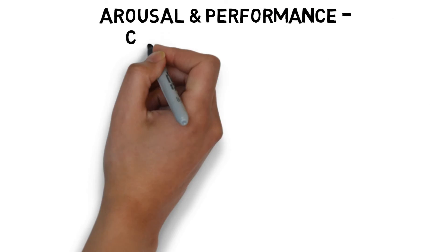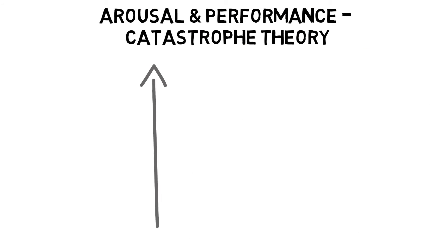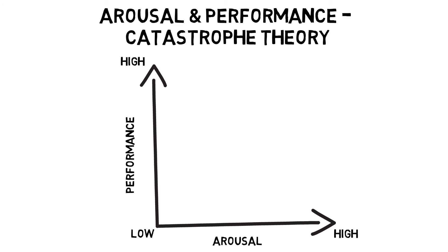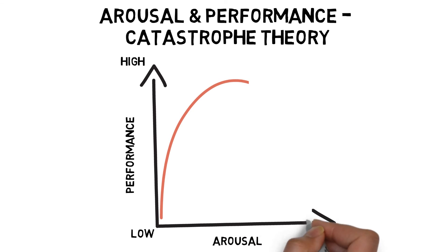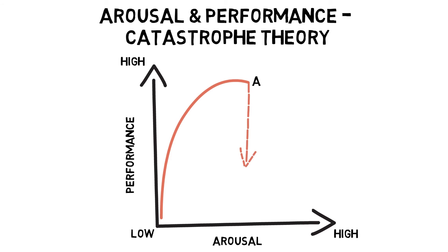Catastrophe theory is a variation of the inverted U theory. This theory suggests that performance does not always decline gradually after the optimal level of arousal has been reached. Instead, it can be a dramatic decline or catastrophe, such as when a performer tries too hard. Point A represents the optimal level of arousal. Point B shows a drastic decline in performance. Here, performance will head one of two ways. Point C shows performance still deteriorating. Point D shows performance recovery, but it's important to note that this does not always return to the optimal level of arousal immediately.